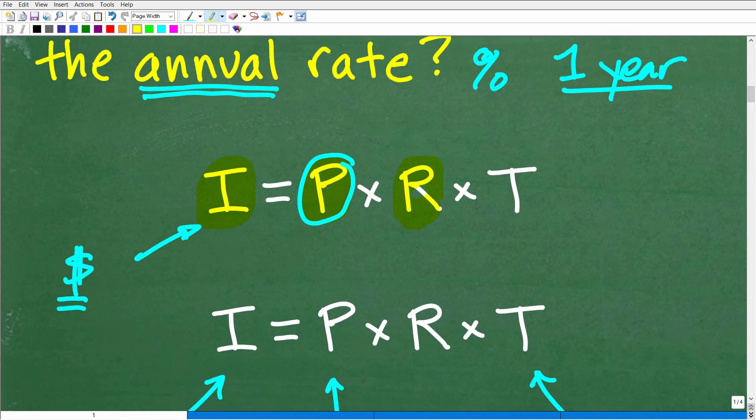This is the rate of interest that this financial institution is going to give us on investing this particular principal amount. And it's going to be almost always expressed in terms of like an annual percentage rate. You'll see this, right? They're talking about one year.